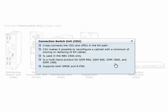The connection switch unit, CXU, cross-connects the CDU and the DTRU in the RX path. The CXU makes it possible to expand or reconfigure a cabinet with a minimum of moving or replacing of RX cables. The CXU is used in the RBS 2X06 only and is a multiband product for GSM 800, GSM 900, GSM 1800, and GSM 1900. The function of CXU is to support both GMSK and 8PSK. One CXU can support up to three CDUs.